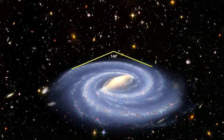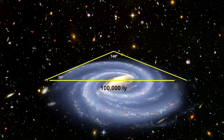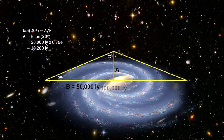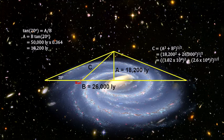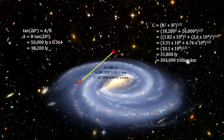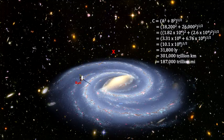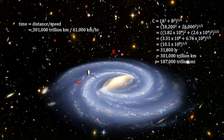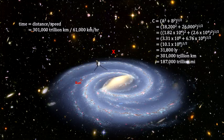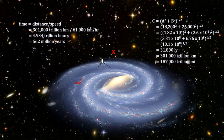If we assume that our field of view is 140 degrees, we can use trigonometry to find the distance to a point where such a picture could be taken. That point is approximately 301,000 trillion kilometers, or 187,000 trillion miles from the sun's current location. Voyager 1, launched in 1977 and traveling at 61,000 kilometers per hour, has already gone 21.2 billion kilometers. If we aimed it at the photographic point at its current velocity, Voyager won't reach this point for another 562 million years.